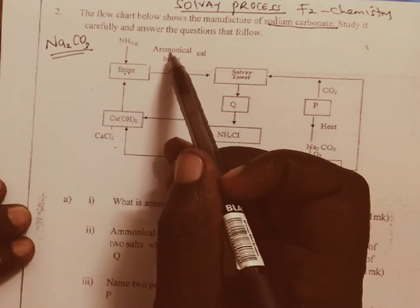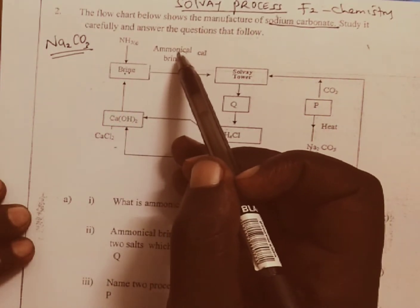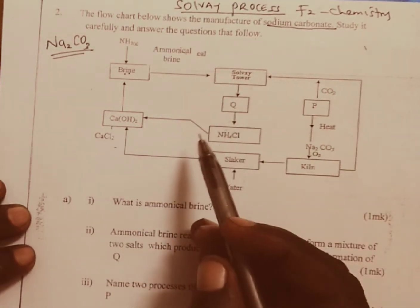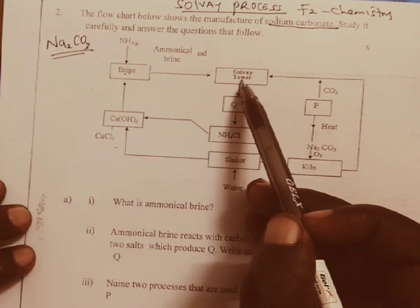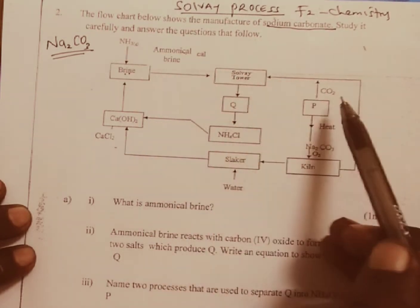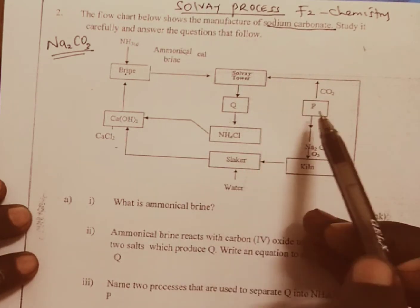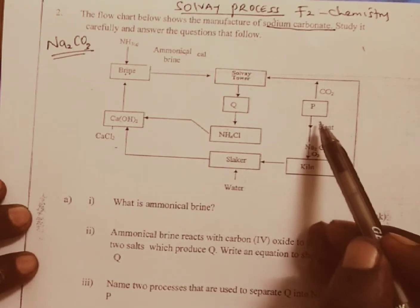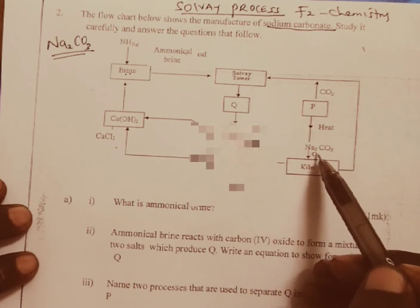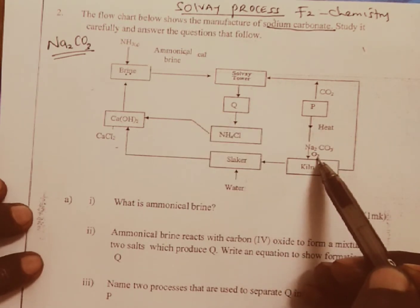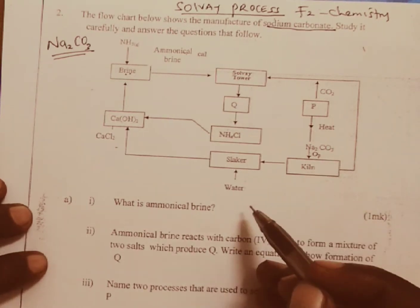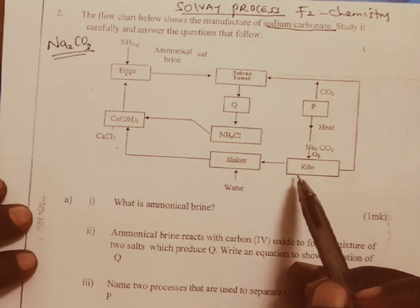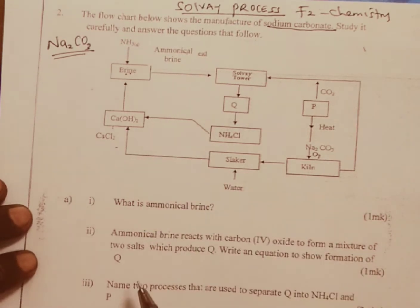Ammonia and concentrated sodium chloride combine to form ammoniacal brine. The two are getting into the Solvay tower where carbon dioxide (CO2) enters from point P. Then P is being heated to produce sodium carbonate that comes down, and we have several steps that we are going to analyze by answering the questions.